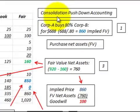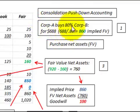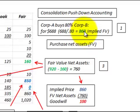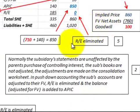We're going to go over push-down accounting in a consolidation — just an overview. Corporation A, the parent company, is going to buy 80% of Corporation B, the subsidiary, and they're going to pay $688,000 for that 80% investment. Based on that, we've got a total implied fair value of Corporation B of $860,000 — that would be the 100% value of Corporation B.